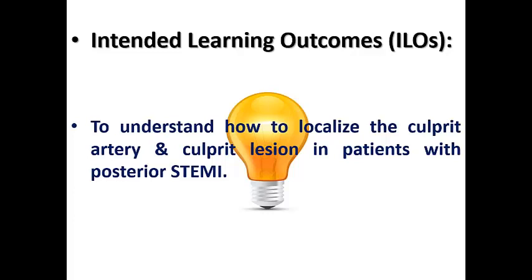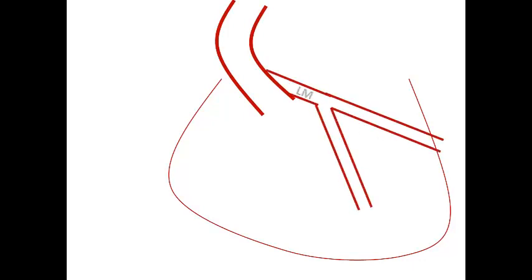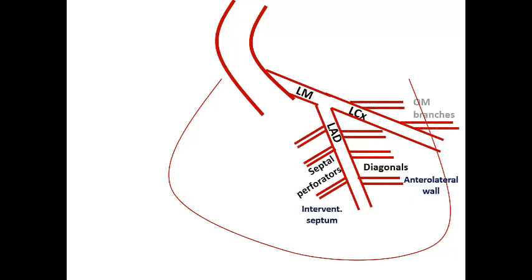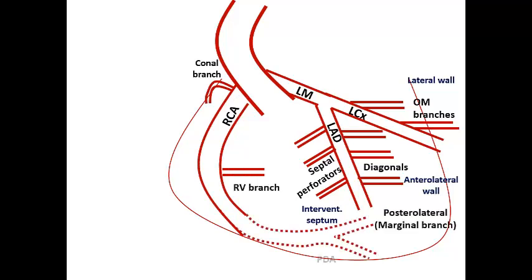Let's remind ourselves again with the anatomy. You have the left main, LAD, and LCX. We have the diagonal, the septal perforators, and the obtuse marginals. Besides the right coronary artery giving the conus branch, the RV branch, and then bifurcating into the posterolateral branch and PDA.